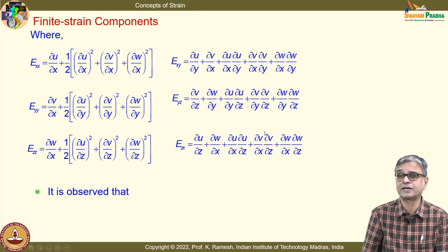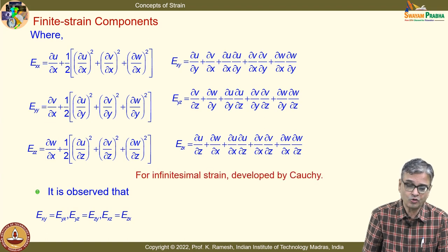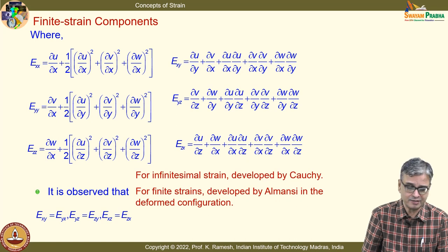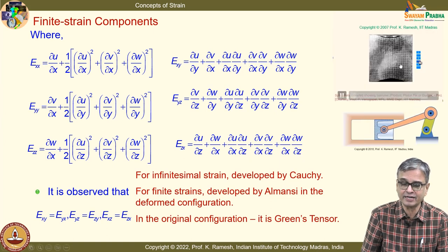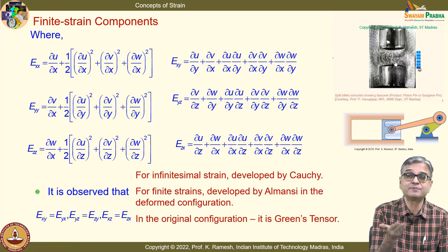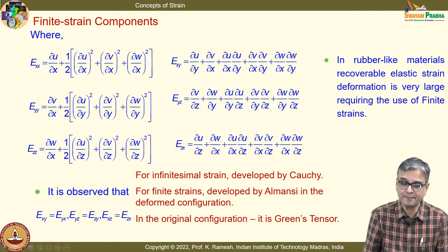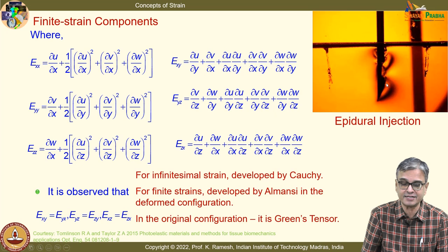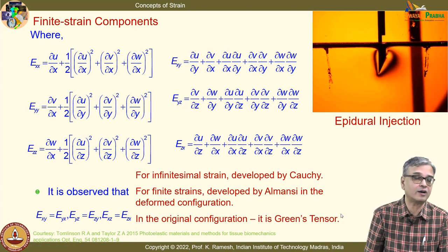We also looked at finite strain components — the literature says these are exact. These become necessary for large deformation, developed by Cauchy, Almansi, and Green. Applications include metal forming — we started strain by looking at the formation of a gudgeon pin used in an IC engine, where deformation is visibly large. The future is in biomechanics: in rubber-like materials, recoverable elastic strain deformation is very large, requiring finite strains. Photoelasticity has been used for epidural injection analysis — a needle inserted deep into skin requires finite strain quantities.